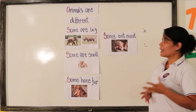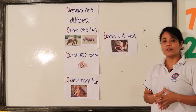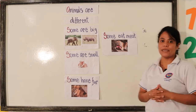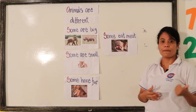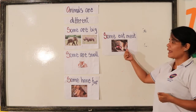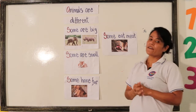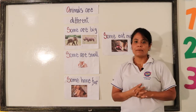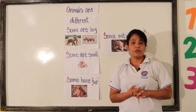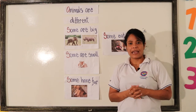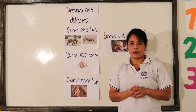We can also say that there are some animals that eat meat. For example, the lion. And remember that we have animals that eat plants too. For example, the elephant.